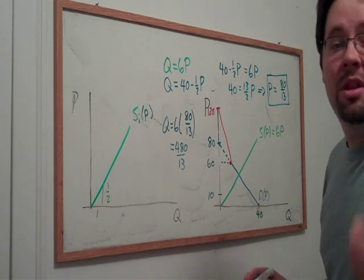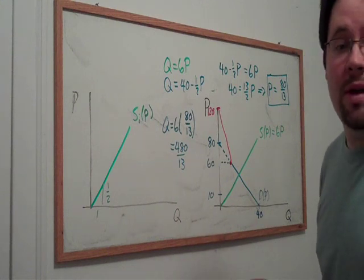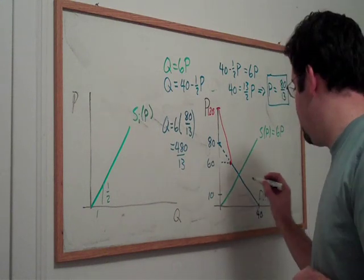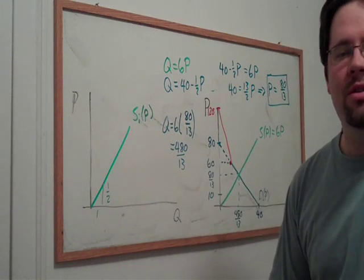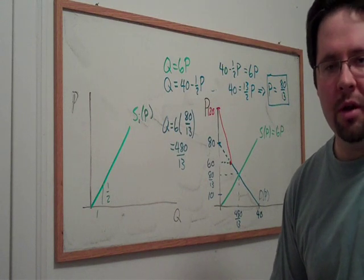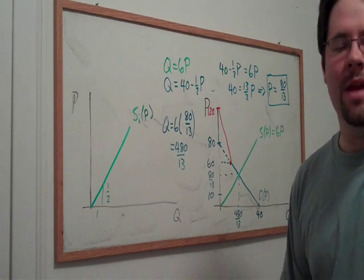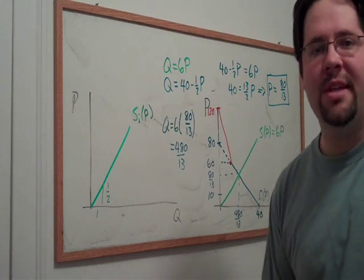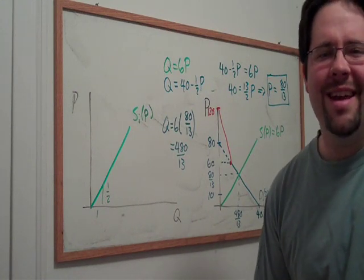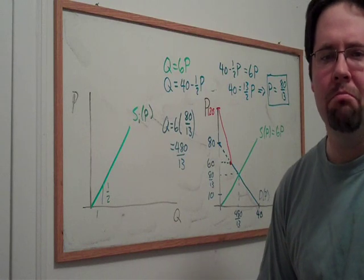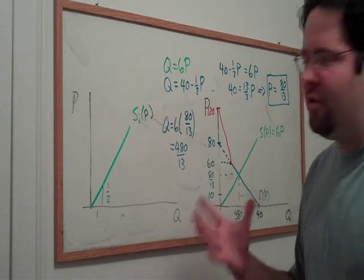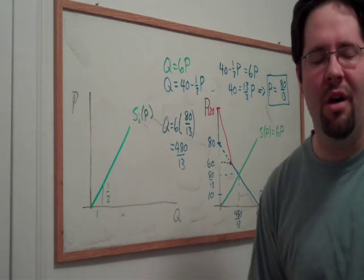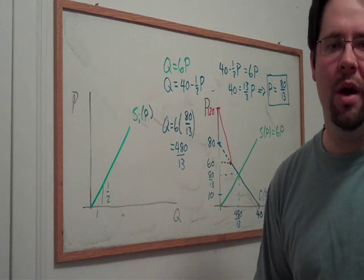So, to complete the diagram, let's go ahead and label where the price and quantity end up being. So, there we have it. We took two segments of a market, aggregated their demand to obtain the market demand curve. And we took a representative firm and we aggregated it up to get a market supply curve. Then we looked and we used our tools for how we understand to solve for equilibrium price and quantity.